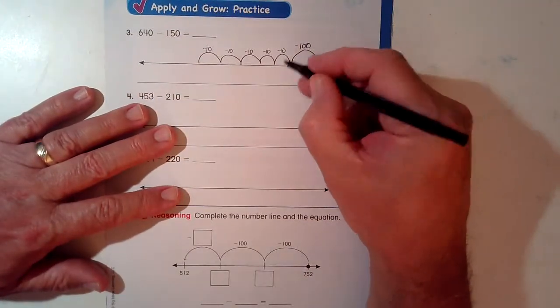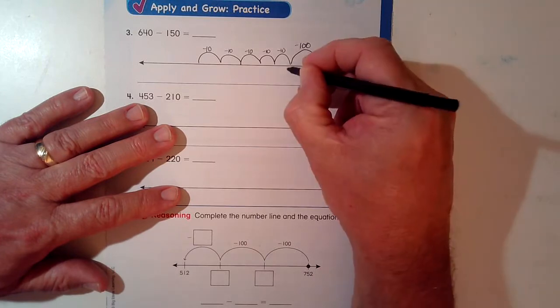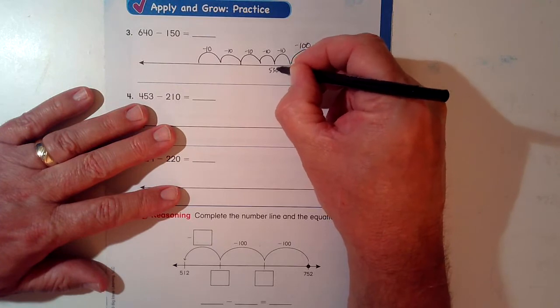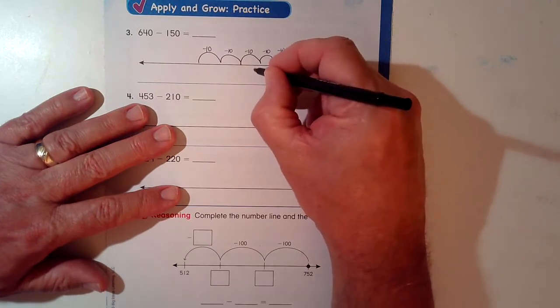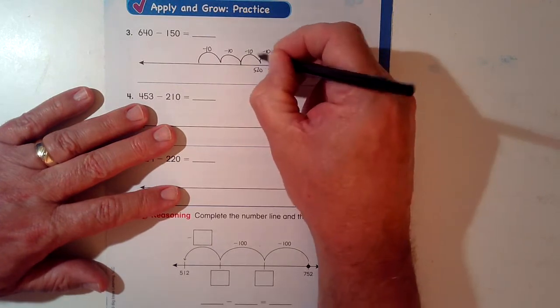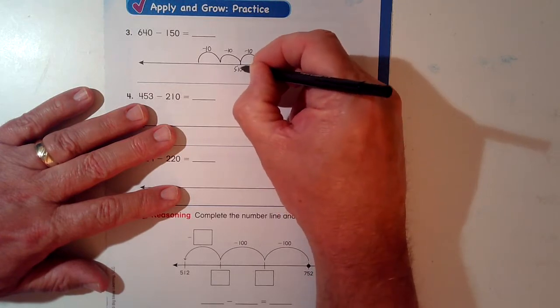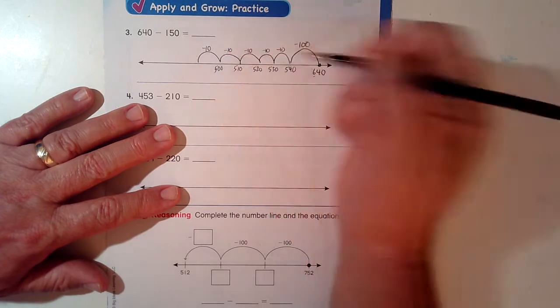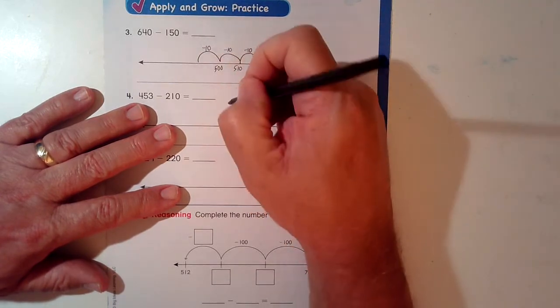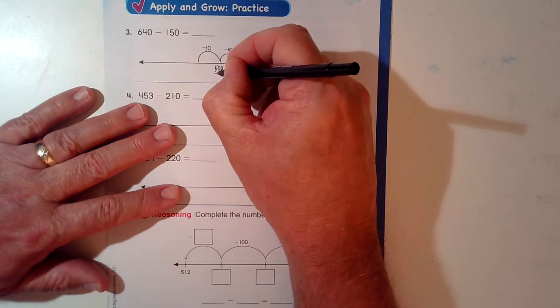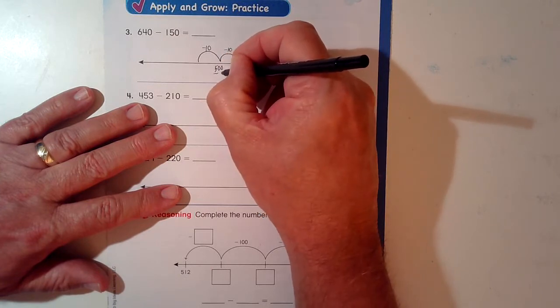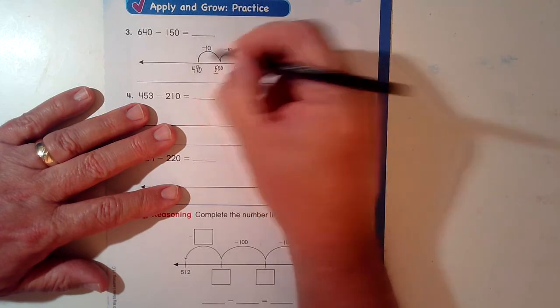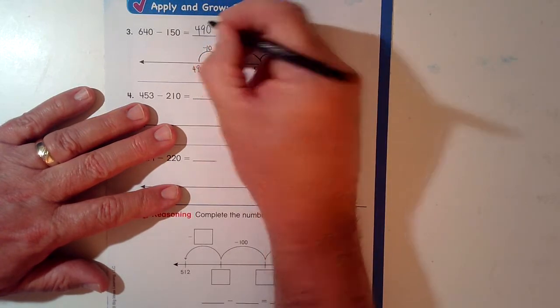So we take away 100. This goes down. 540, 540 minus 10, 530. 530 minus 10, 520. 520 minus 10, 510. 510 minus 10, 500. And then 500 minus 10, think of it as 10s. 50 10s? Nope, it is now 49 10s. 490. Okay, next.